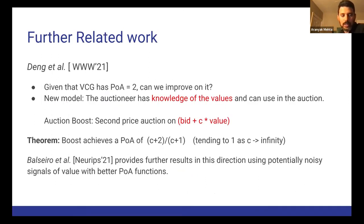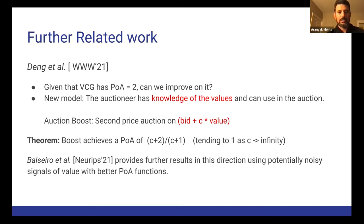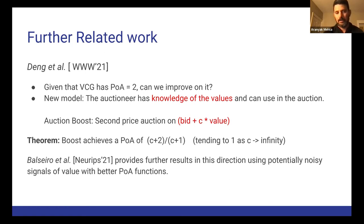After this result, Deng et al. in WWW 2021 asked whether we can improve on VCG's price of anarchy of 2. They introduced a new model assuming the auctioneer has knowledge of the values and can use them in the auction. They introduced an auction called Boost — a second-price auction not just on the bid but on bid plus C times the value, where C is a parameter. They proved that Boost achieves a price of anarchy of (C+2)/(C+1). When C equals 0 we recover VCG's price of anarchy of 2, and as C grows large this tends to 1. This was further extended by a superset of authors in NeurIPS 2021.